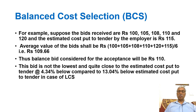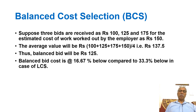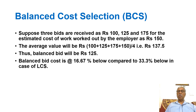Suppose only three bids are received as 100, 125, and 175, where the difference is quite large, and the estimated cost worked out by the employer is 150. The average value comes to 137.5, and the balanced bid is 125 — only 16.67 percent below estimate, compared to 33.3 percent below in the case of LCS. Even where there is a wide gap between bidders, BCS gives quite a reasonable cost.